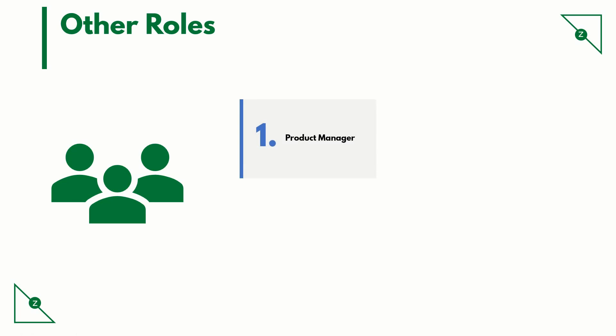A product manager is typically the person whom a product owner reports to. While a product owner deals with smaller chunks of requirements called user stories, a product manager deals with the superset of user stories called features. We will talk more in detail about features and stories later in this course.